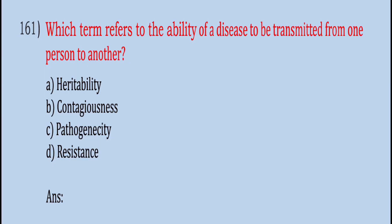Which term refers to the ability of a disease to be transmitted from one person to another? Heritability, Contagiousness, Pathogenicity, Resistance. The correct answer is B, Contagiousness.